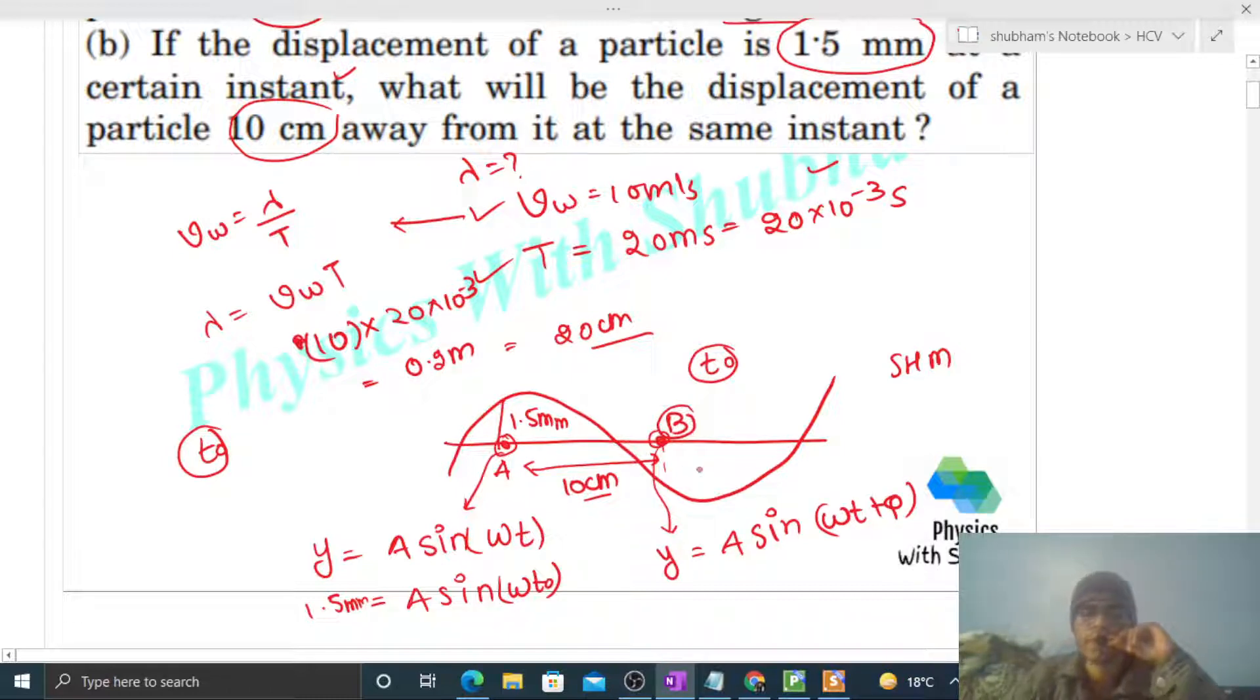Now particle B's SHM equation will be something like A sin omega T plus phi. There will be some phase difference also between particle A and particle B. Can you find out how much phase difference will be there? How do we find out? Phase difference is equal to 2 pi divided by lambda into the distance between the two particles. So phase difference will be 2 pi divided by wavelength that is 20 and distance between the two particles is 10.